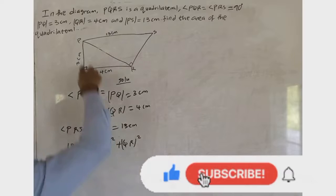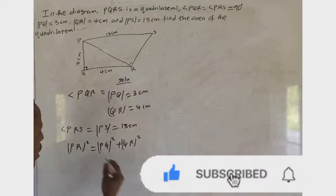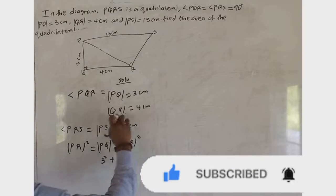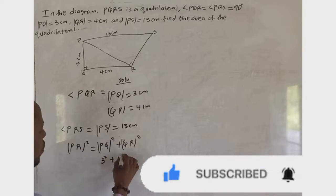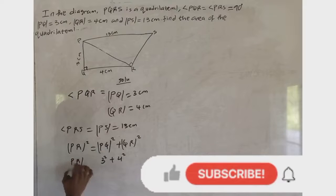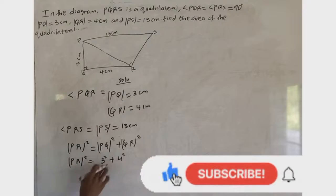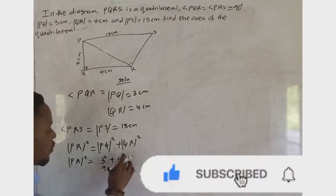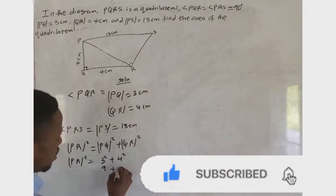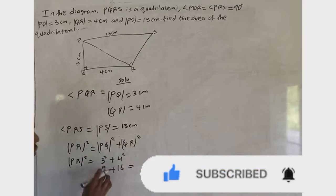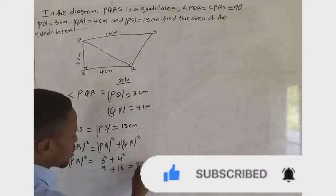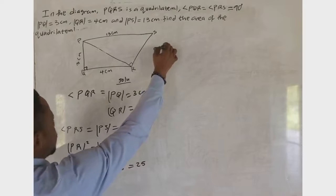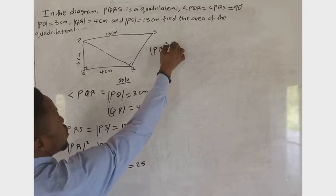So mathematically: PR² = PQ² + QR². Our PQ is given as 3 cm, so we have 3² plus QR is given as 4 cm, so 4². That gives us: 3² = 9, and 4² = 16, so 9 + 16 = 25. Therefore PR² = 25.